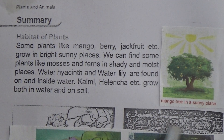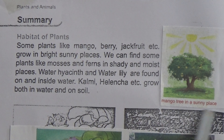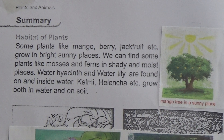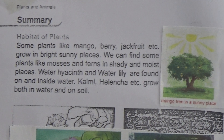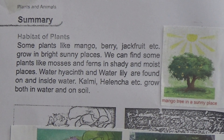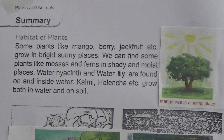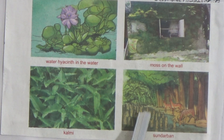You can see here is a mango tree growing in a sunny place. This is water hyacinth in the water — they are aquatic plants. This is mosses on the wall, and this is kalmi. And this is a picture of the Sundarbans.